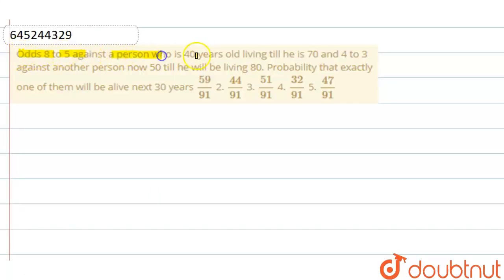The odds are 8 to 5 against a person who is 40 years old living till he is 70, and 4 to 3 against another person now 50 living till he will be 80.